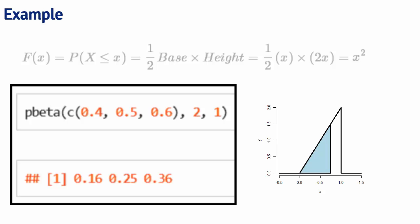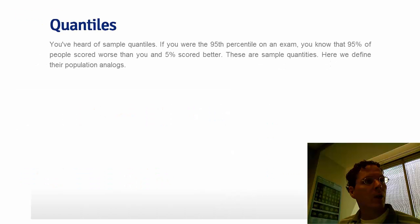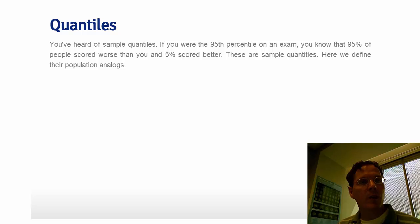In the future, we'll work with more complicated density functions, but it will be easier because we'll rely on functions like pnorm and pbeta in R instead of working them out directly. You've already heard of sample quantiles — for example, if you scored the 95th percentile on an exam, 95% of students scored worse than you and 5% scored better.